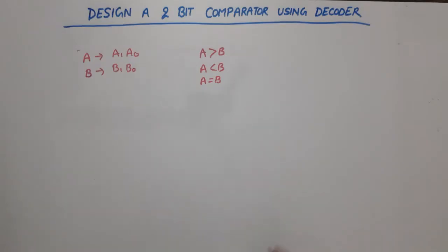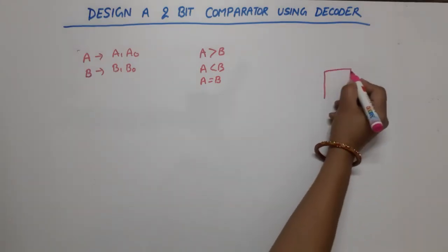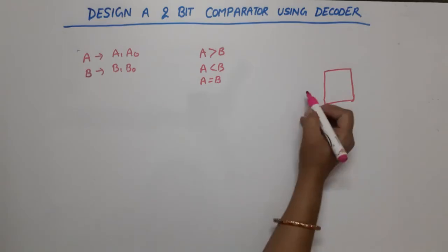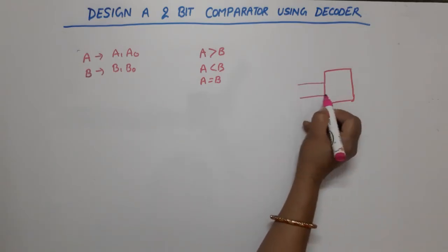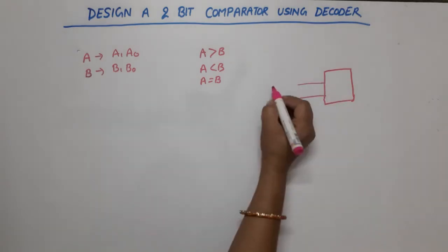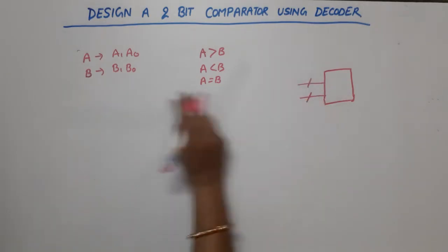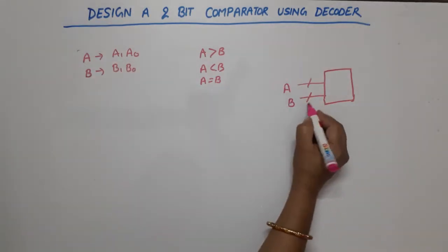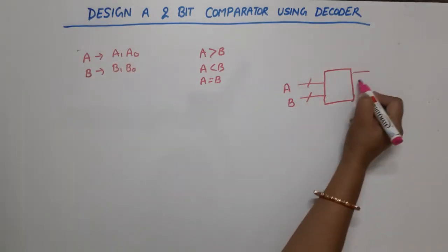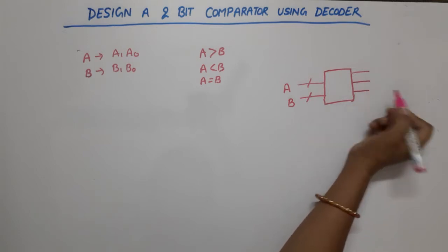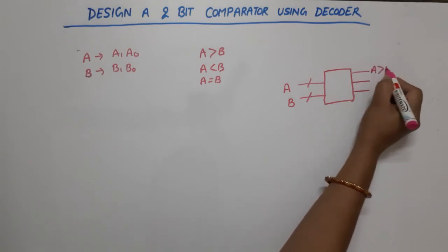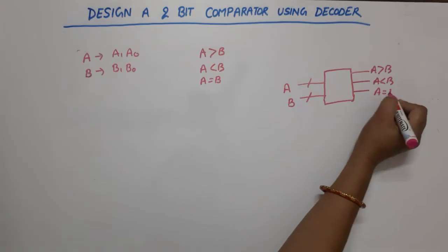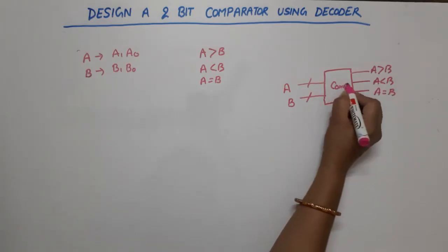If we look at its block diagram, we have a Decoder. We have two 2-bit inputs — bits of A and B — and correspondingly three outputs: A greater than B, A less than B, and A equal to B. This is our Comparator block diagram.